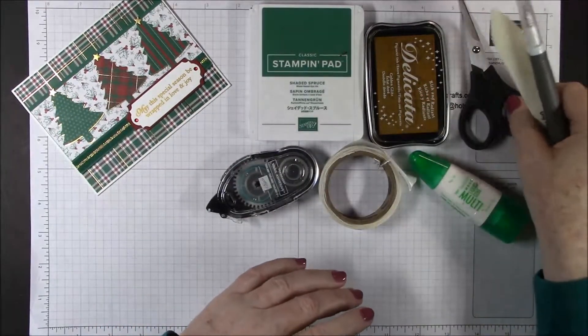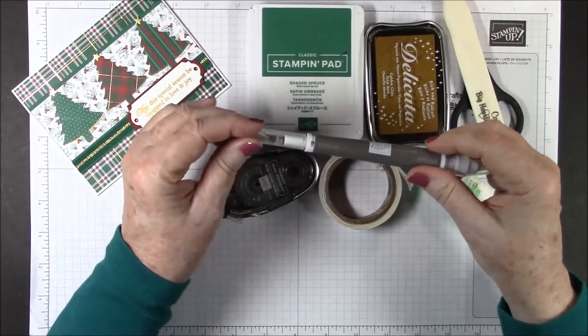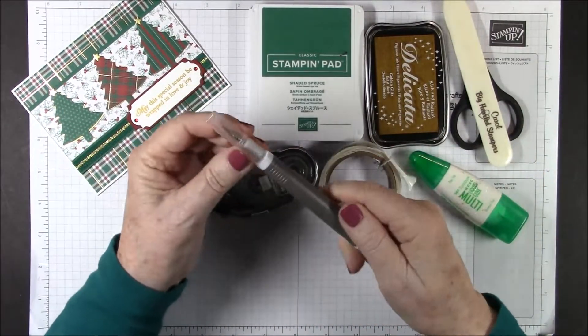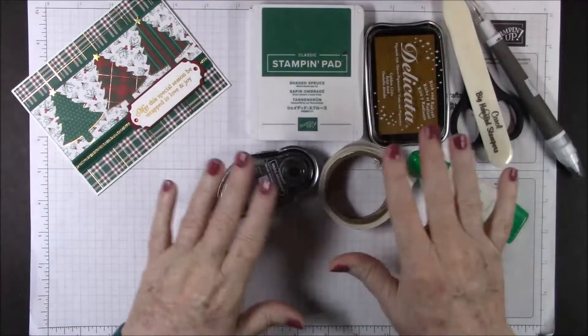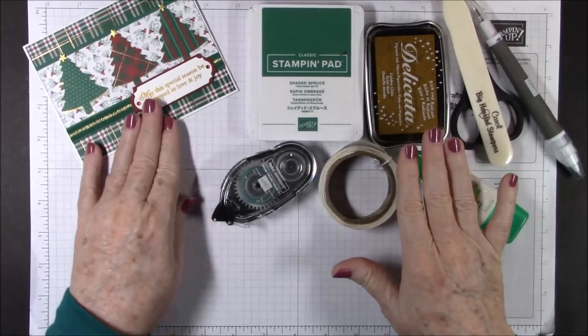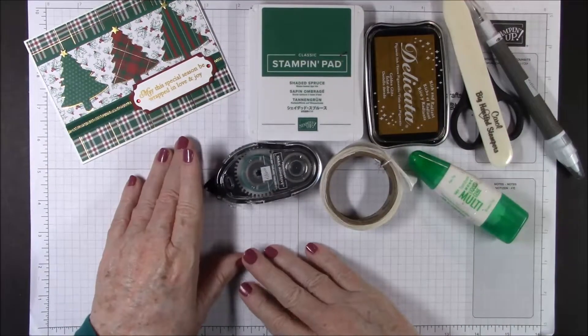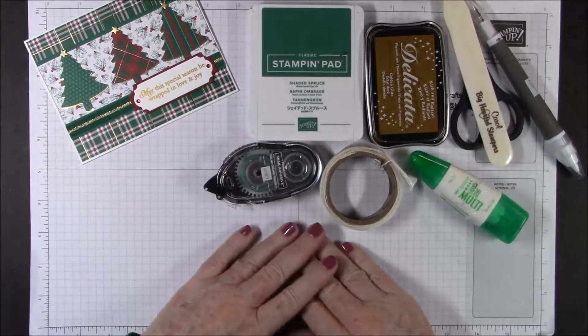You'll want some scissors, a bone folder, and I'm using the take your pick tool but you could use whatever pointy tool you use. There won't be any die cutting but you will need your stamparatus or stamp positioner.